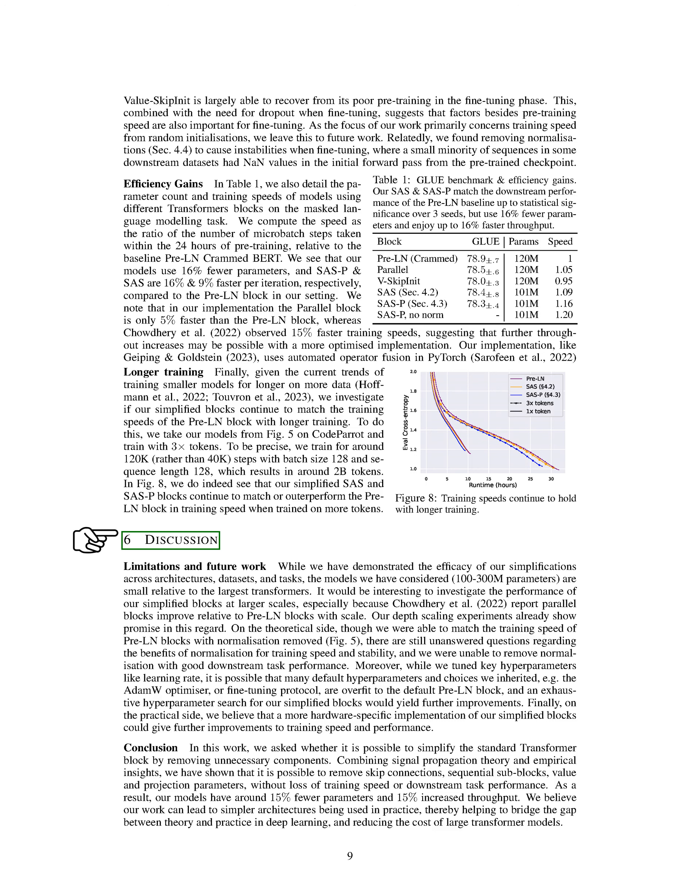In our discussion section, we'll address the limitations of our study and propose areas for future research. While our simplified models have proven effective across various architectures, datasets, and tasks, they are relatively small, with only 100 to 300 million parameters, compared to the largest transformers. It would be intriguing to explore how our simplified blocks perform at larger scales. This is particularly interesting because reports suggest that parallel blocks perform better than pre-LN blocks as the scale increases. Our experiments with depth scaling have already shown promising results in this direction.